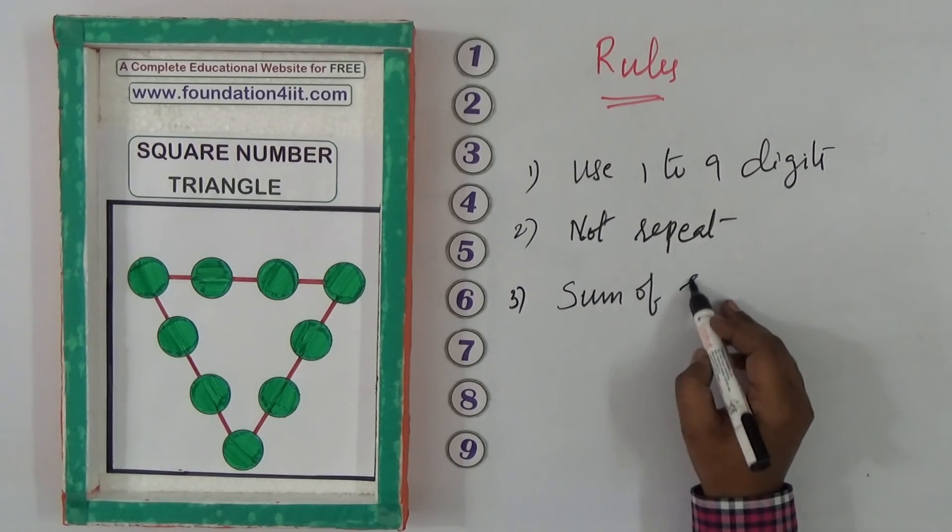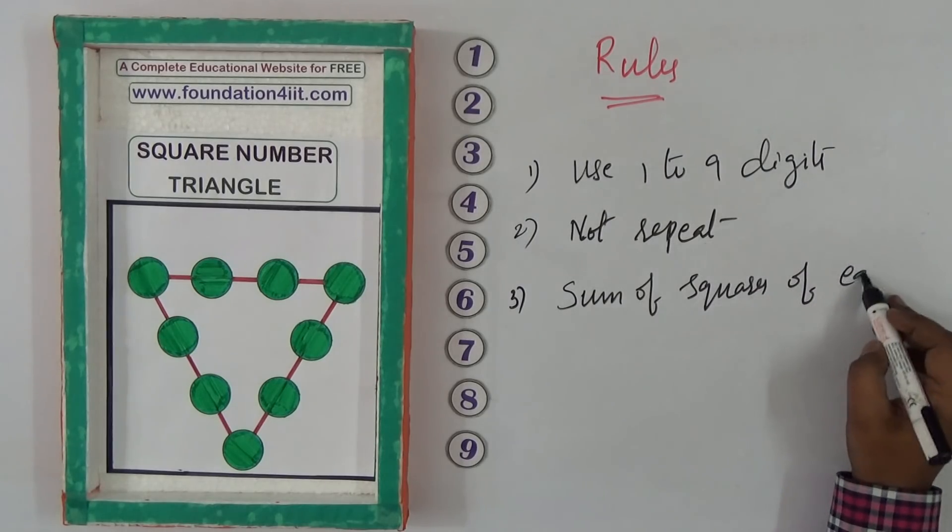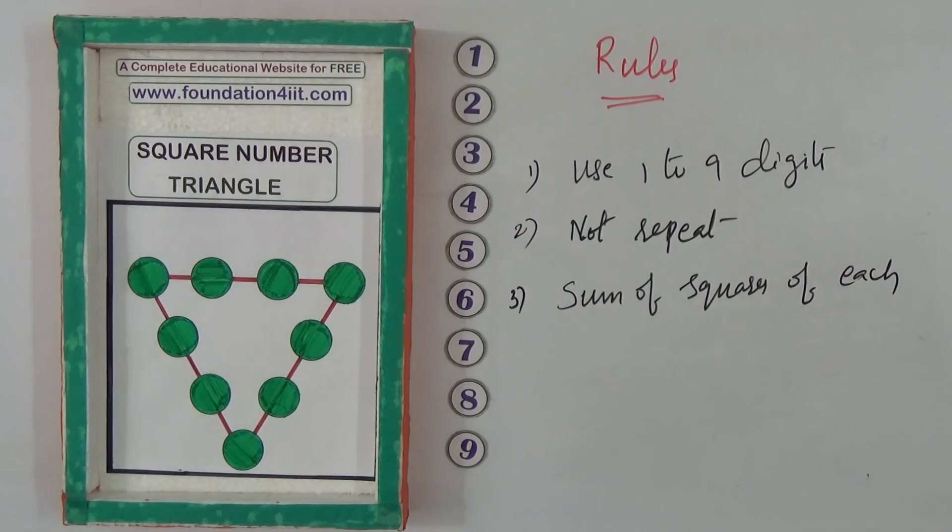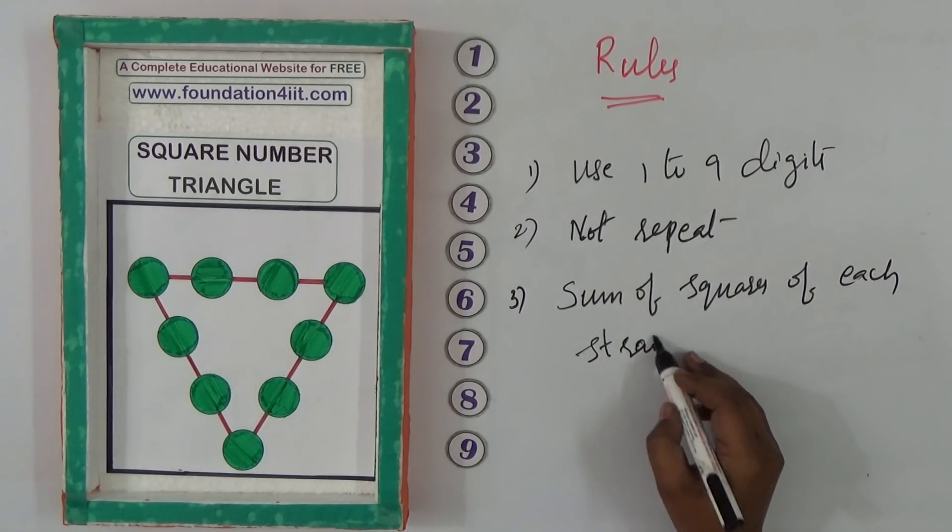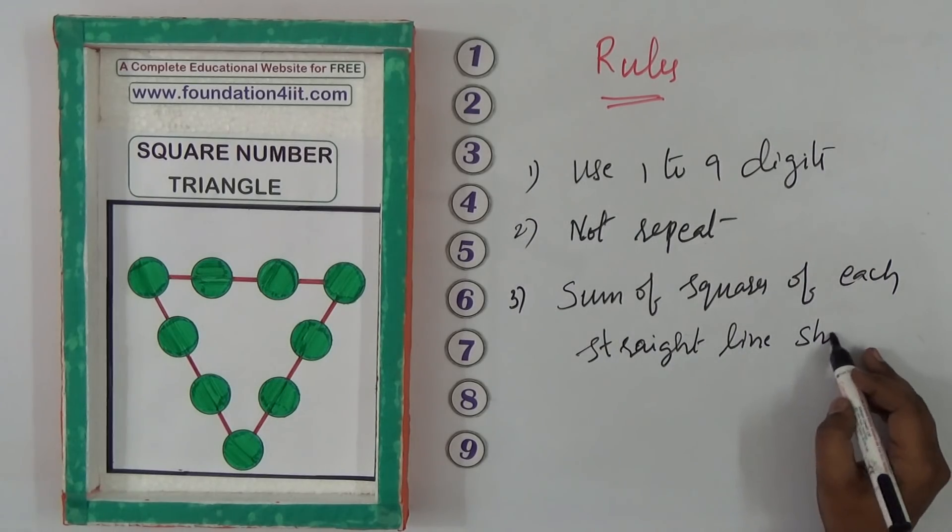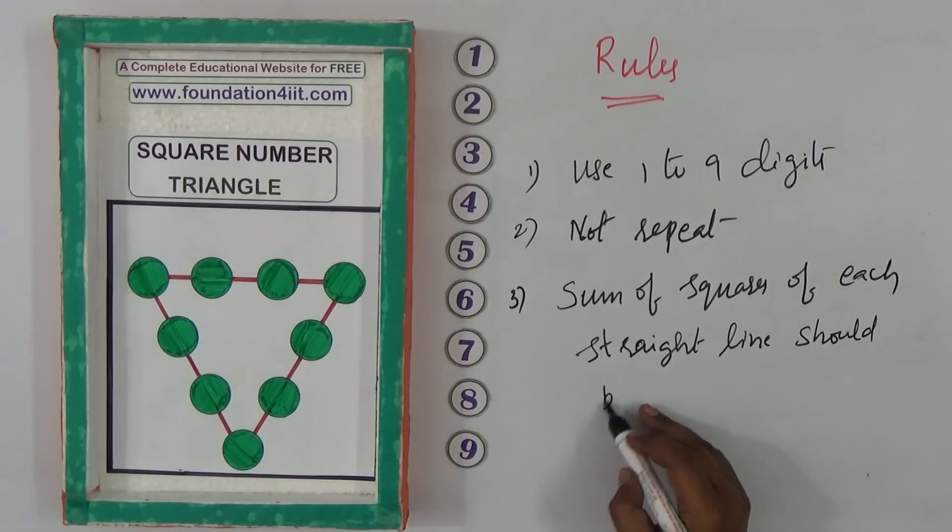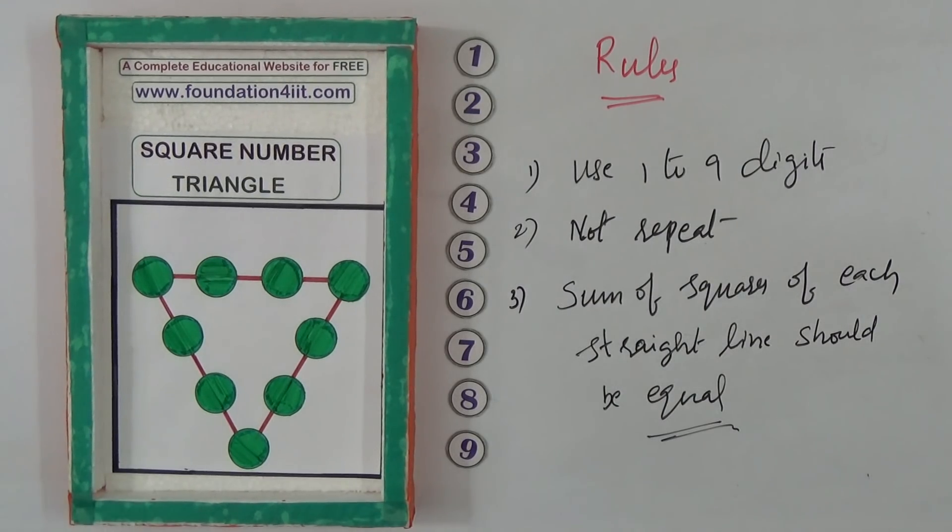The main thing is the sum of the squares of each straight line. Sum of squares of each straight line should be equal. This is the main point we need to make equal. Let me show you one method here, then you can try different.